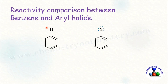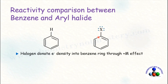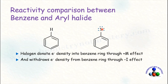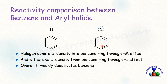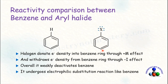Now compare the reactivity of benzene and aryl halide. In aryl halide, halogen is bonded to the benzene ring. Due to the presence of a lone pair, it donates electron density through the +M effect. But being electronegative, it also withdraws electron density from the benzene ring through the −I effect. So overall, it deactivates the benzene ring by reducing electron density. But aryl halide still undergoes electrophilic substitution reactions like benzene.